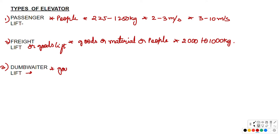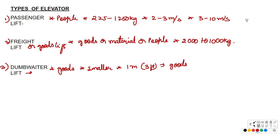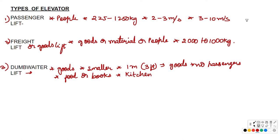Next is the dumbwaiter lift. This elevator is designed to carry goods, similar to freight elevators, but its height is smaller — about 1 meter or 3 feet. No passengers are allowed. These are used to carry food or books and are usually connected directly from the ground floor to the kitchen.